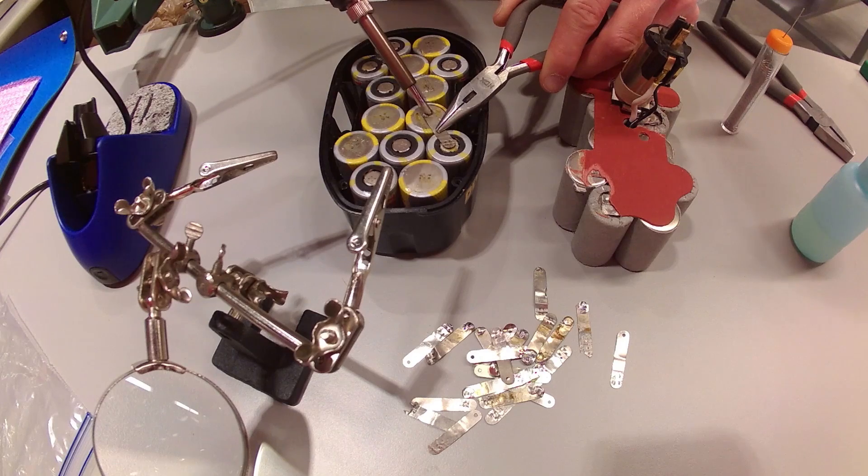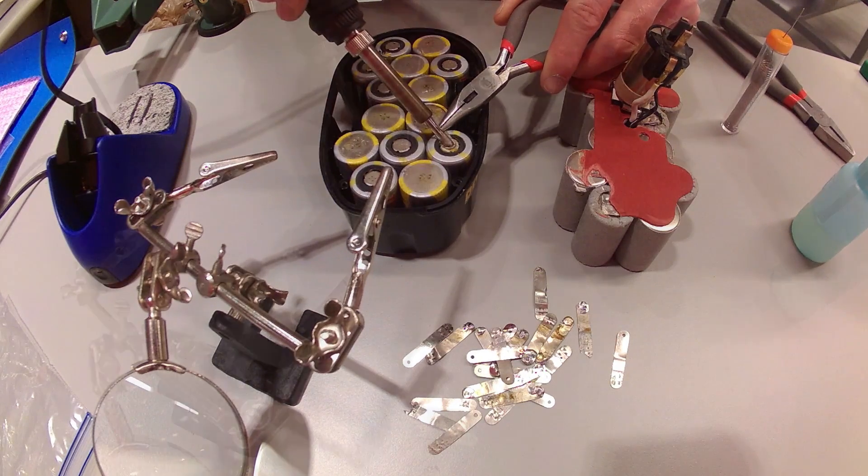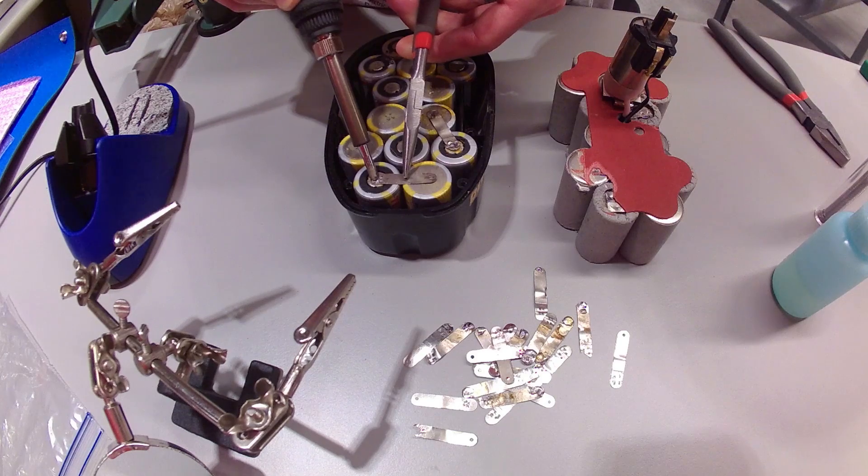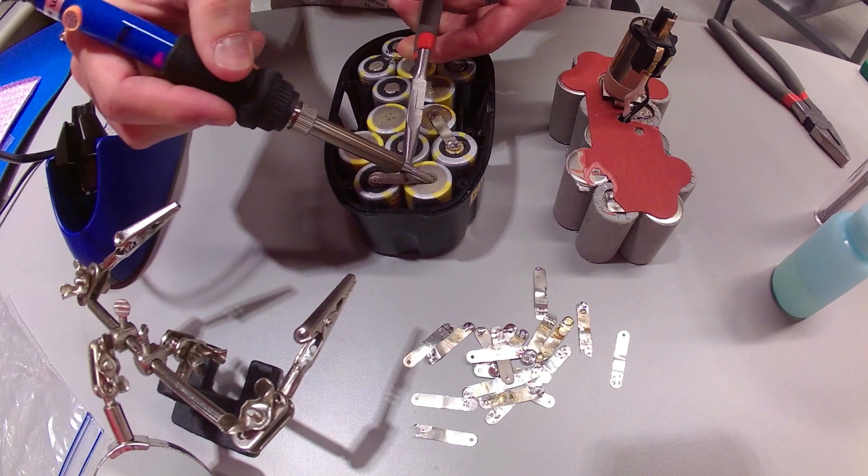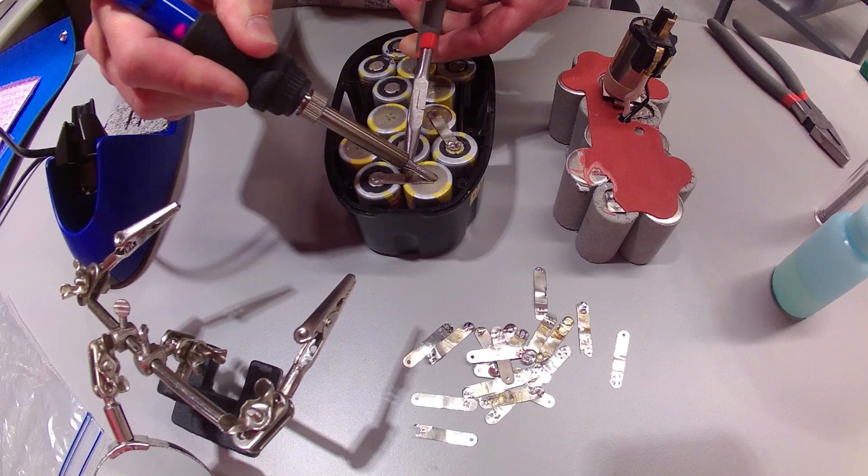So one hand you'll use a pair of pliers or something to hold the solder tab down, and with the other hand of course you'll press down on your little solder bead and smoosh it between the solder tab and the top of the battery. Now make sure you don't spend more than a few seconds here because the heat can ruin the battery.